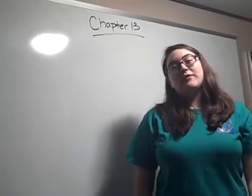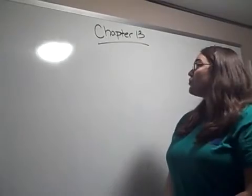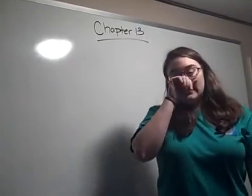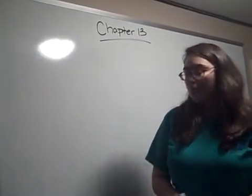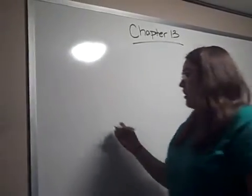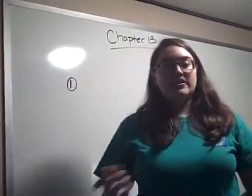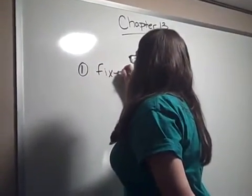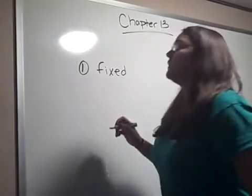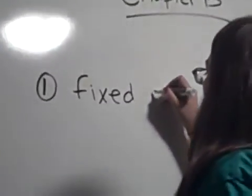Chapter 13 is about binomial distribution. In order to have a binomial distribution, there are four rules that need to apply. The first one is that there are a fixed number of observations. Observations is normally abbreviated by the letter N.